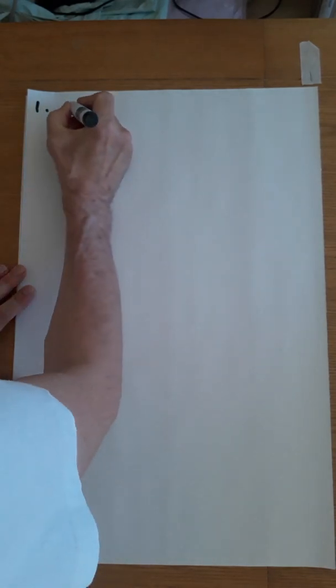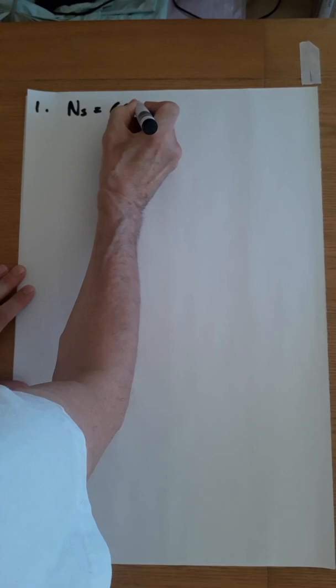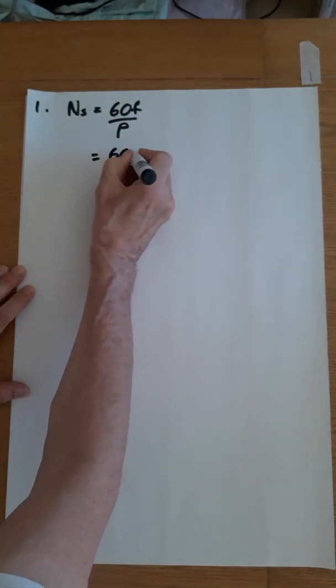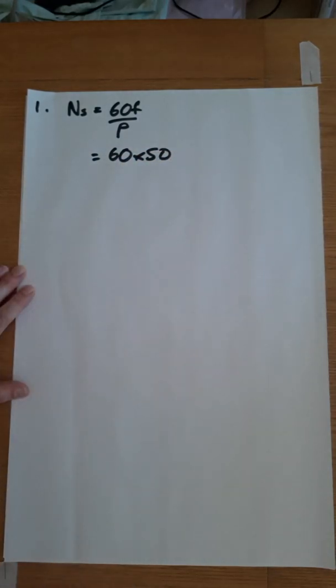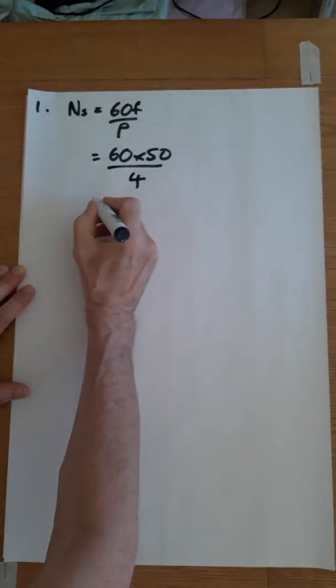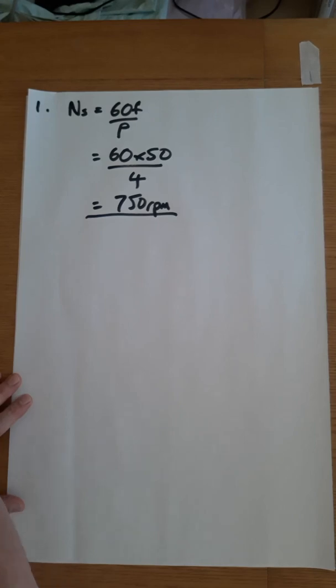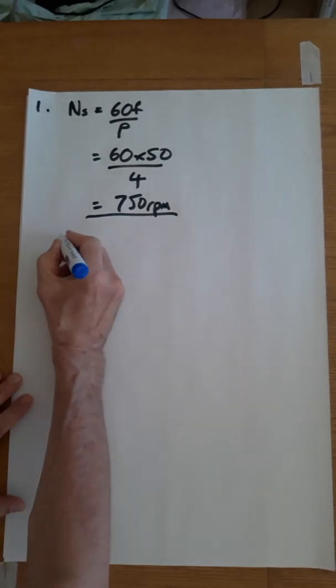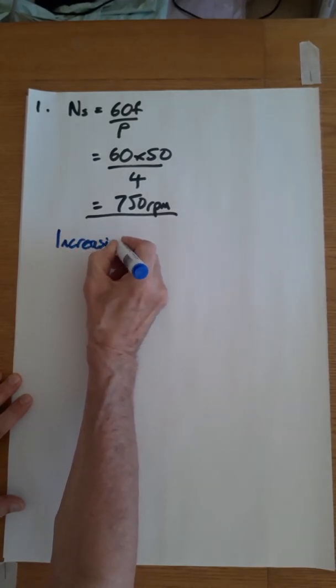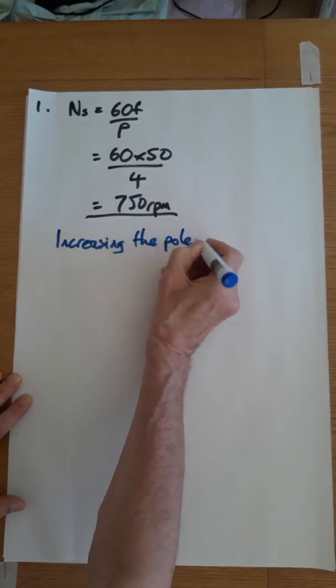Question one states: you have an eight pole induction motor on a 50 hertz supply — what is the synchronous speed in rpm and what has been the effect of increasing the number of poles? Formula: ns = 60f over p. Put the numbers in: 60 times 50, eight poles is four pairs, giving you 750 rpm. Increasing the number of poles reduces speed.